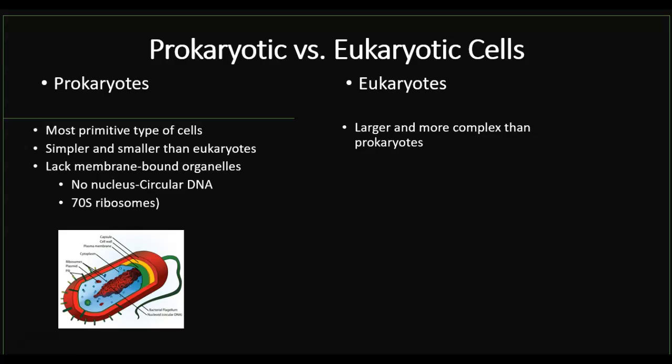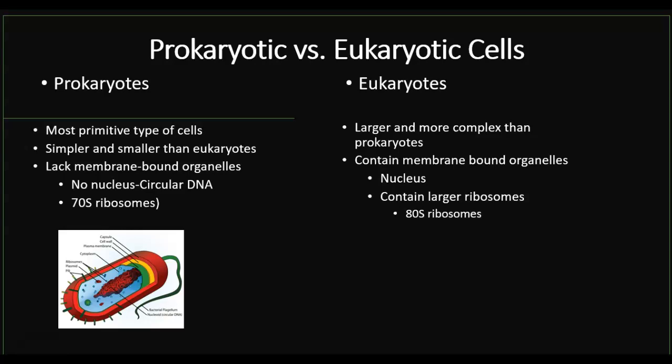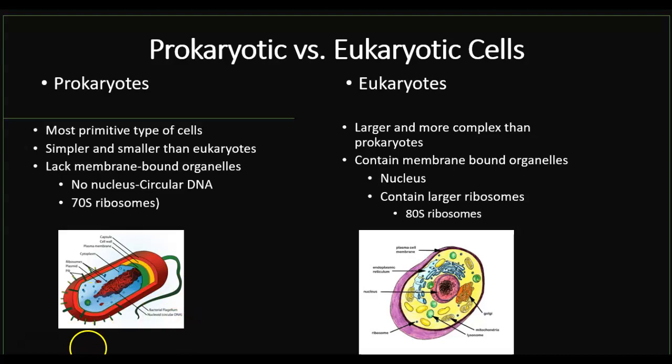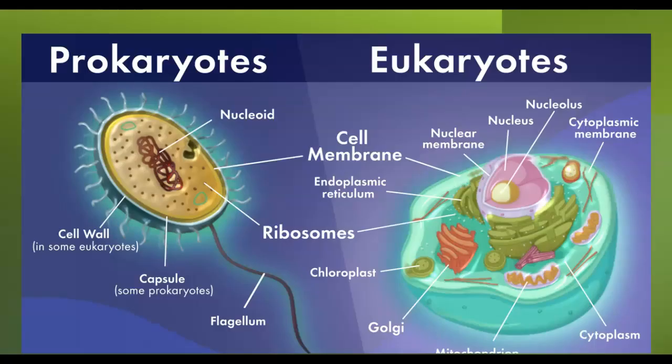Eukaryotes, on the other hand, are going to be much larger and more complex — they require more energy. They do contain membrane-bound organelles, so they have a nucleus, and you will see other organelles such as the mitochondria, the Golgi, and all the others. They do have ribosomes, but they have another type called the 80S ribosome. Bacteria and archaea are the two types of organisms considered prokaryotes, and everything else is going to be eukaryotic.